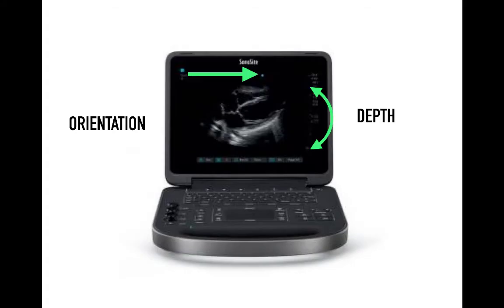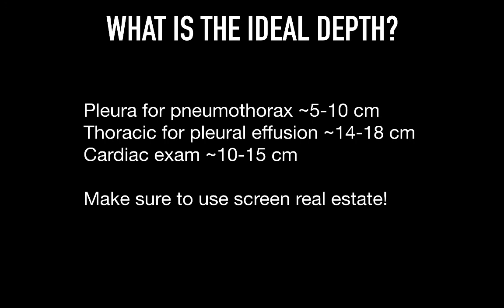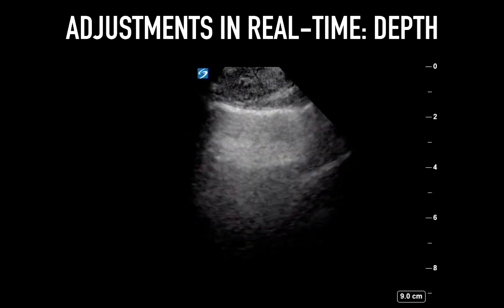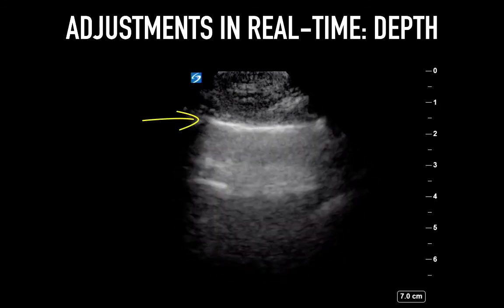On the Edge screen, depth is displayed on screen right and the marker is displayed at the top by a blue dot. On the Xport, orientation is shown with the screen marker and depth is manually adjusted on screen right. The ideal depth depends on what you are looking at — optimize your screen real estate. For pleural pneumothorax use 5 to 10 cm; for thoracic space and pleural effusions, 14 to 18 cm; for the cardiac exam, 10 to 15 cm. Here is a real-time adjustment starting at 15 cm where the examiner reduces depth, resulting in much better visualization of the pleural line.